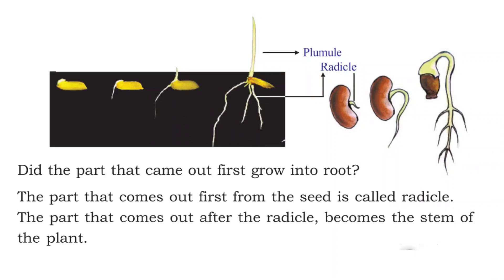The part that comes out first from the seed is called the radicle. The part that comes out after the radicle is called the plumule. After a few days, the radicle changes into the root and the plumule changes into the stem. So the radicle becomes the root and the plumule becomes the stem. Don't forget — this is an important one.